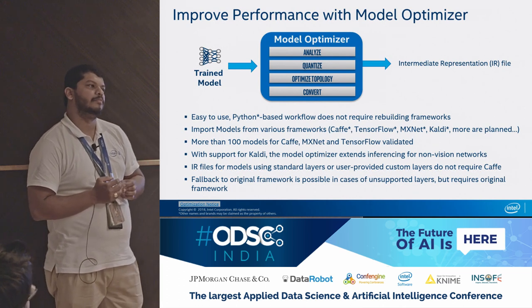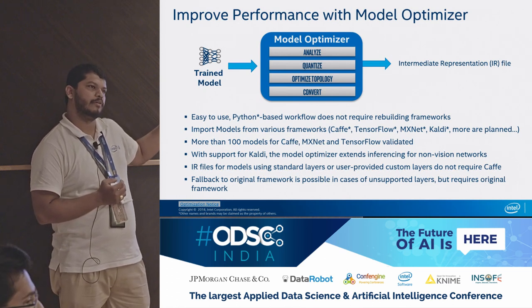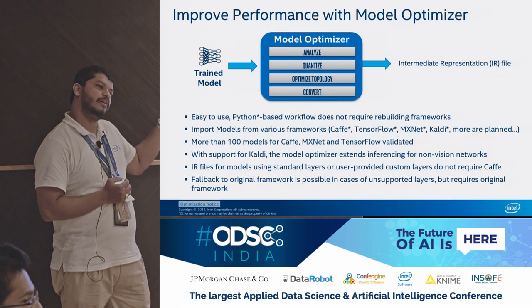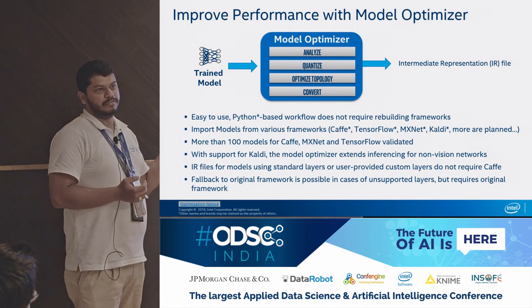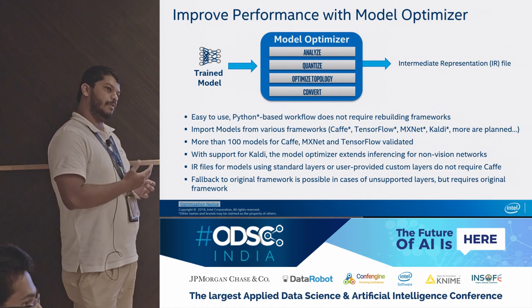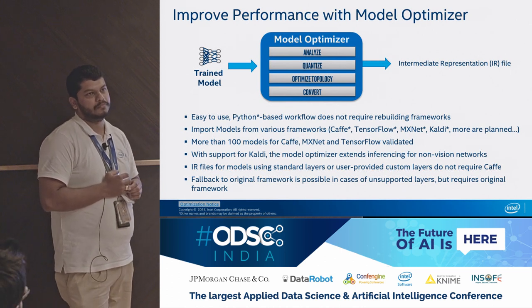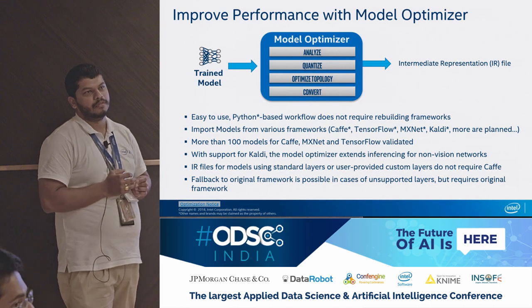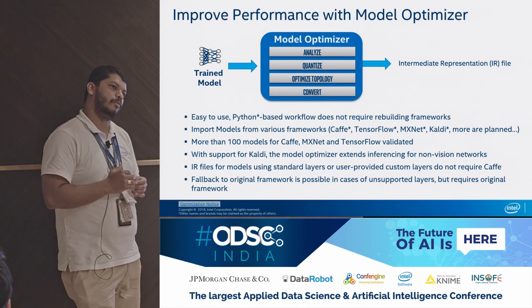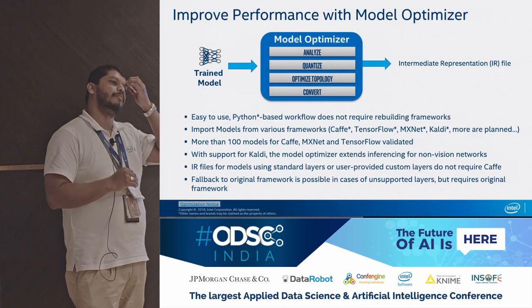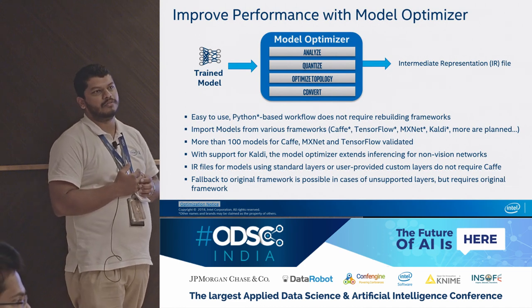Regarding custom layers: if you download the OpenVINO toolkit, there is detailed documentation inside listing what layers in Caffe and TensorFlow are supported. If your custom layer uses operations that are already listed as supported, then it's fine. But if it's something new, OpenVINO treats it as unknown and extra work needs to be done. So it depends on whether whatever you have is already supported — there is a detailed list of internal operations it supports. If your custom layer also supports those, it's directly supported; otherwise it requires additional work.